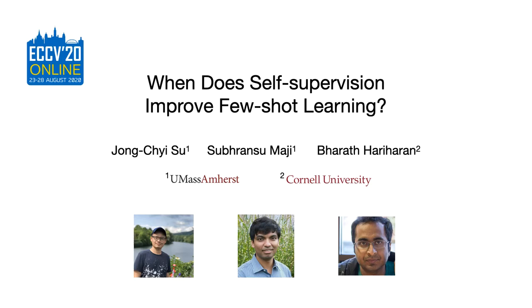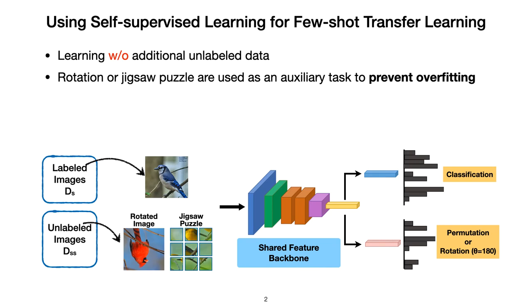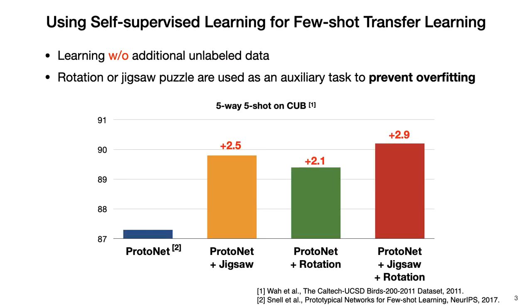Hi everyone, I am Zhongqi from UMass Amherst. We propose to use self-supervised learning to help few-shot transfer learning. The self-supervised loss is a regularization to prevent overfitting. We use rotation and jigsaw puzzle as self-supervision, which improves over the baseline on seven benchmarks without additional unlabeled data.